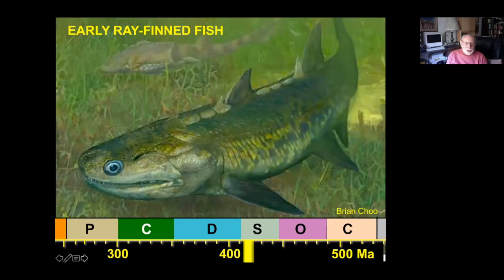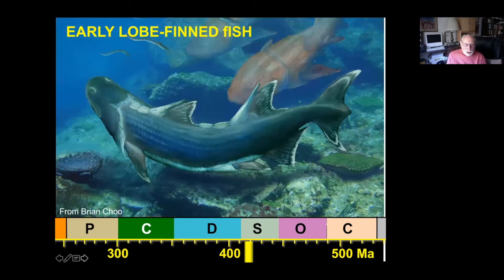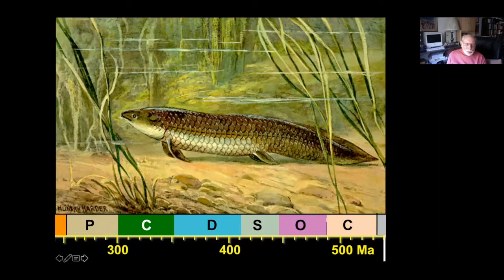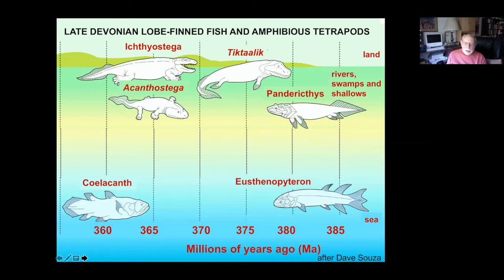Bony fish had arrived somewhat earlier, back during the Silurian. These early bony fish divided quickly into two groups: those with ray fins, where fins extended out as a set of rays, and the lobe-finned fish, where fins develop on fleshy projections extending out from the body — as seen in modern examples like the coelacanth or the Australian lungfish. These fleshy projections could be used to help a fish creep along the bottom. They crept into shallow water and, with time, developed the ability to breathe air and to move about on the surface. And so we had the first amphibians.